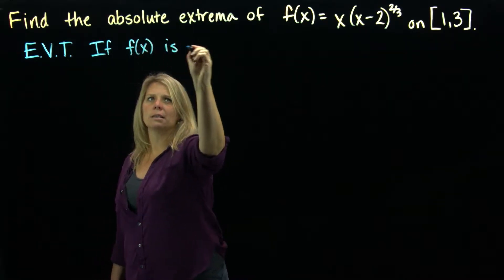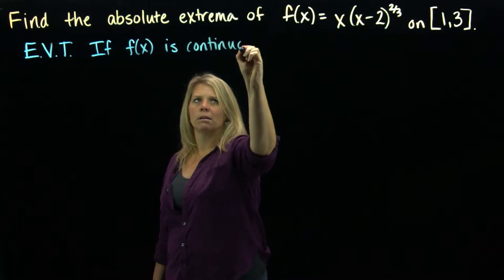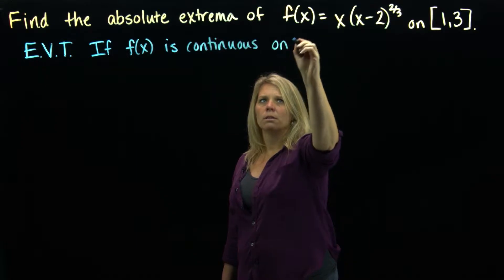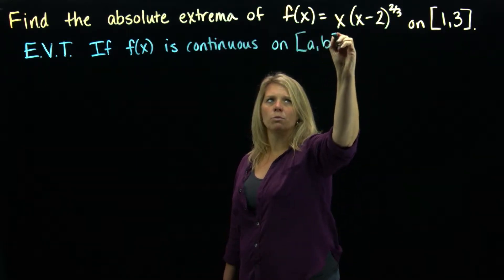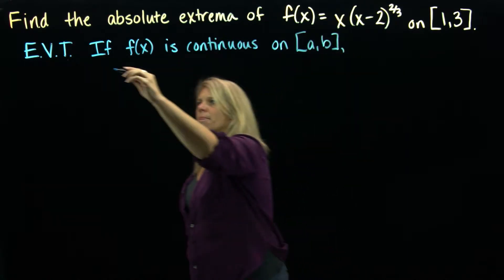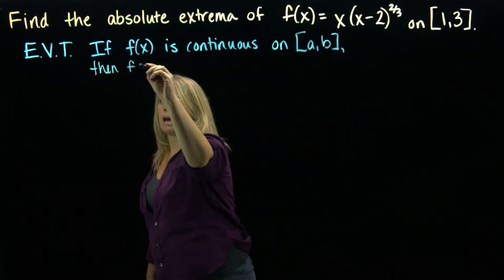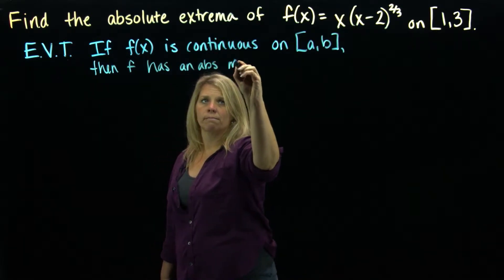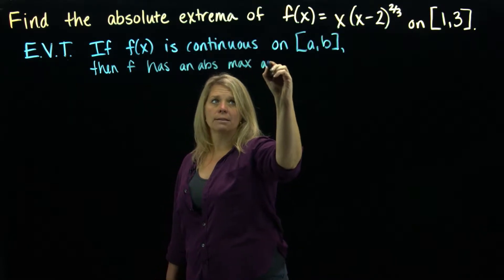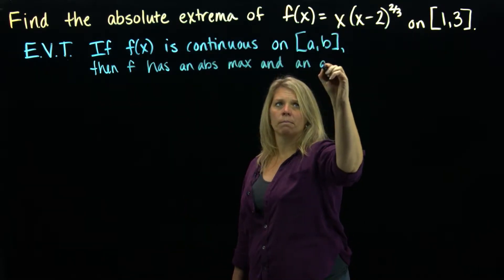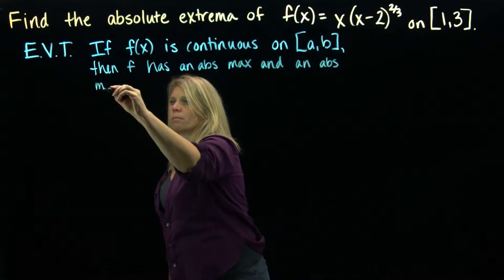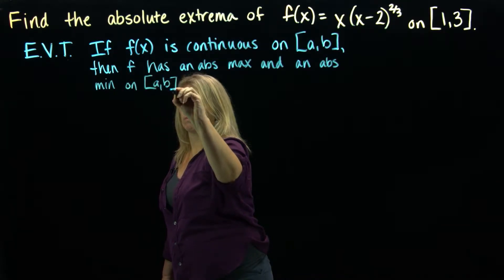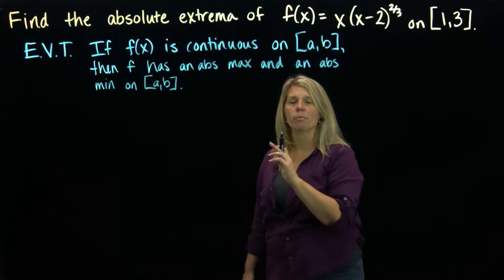If f of x is continuous on a closed and bounded interval — so an interval from a to b, including both those endpoints — then the function f has an absolute maximum on that interval. So that's just a little restatement of that theorem we've been looking at.